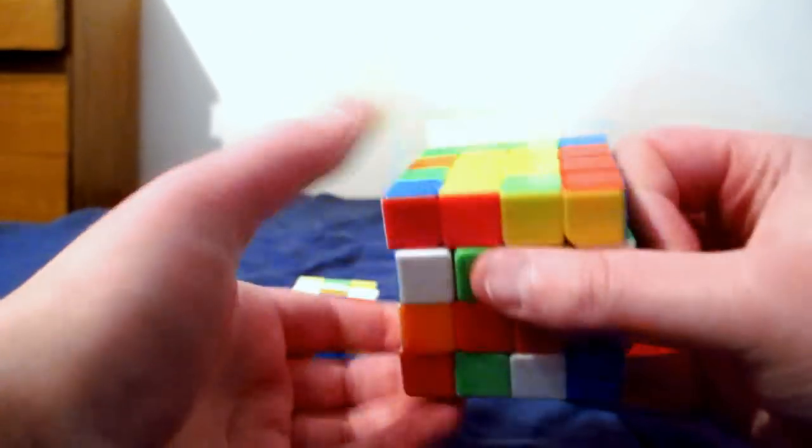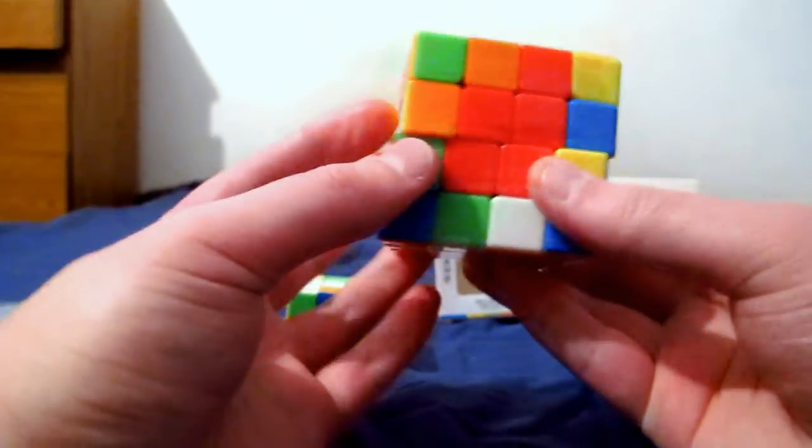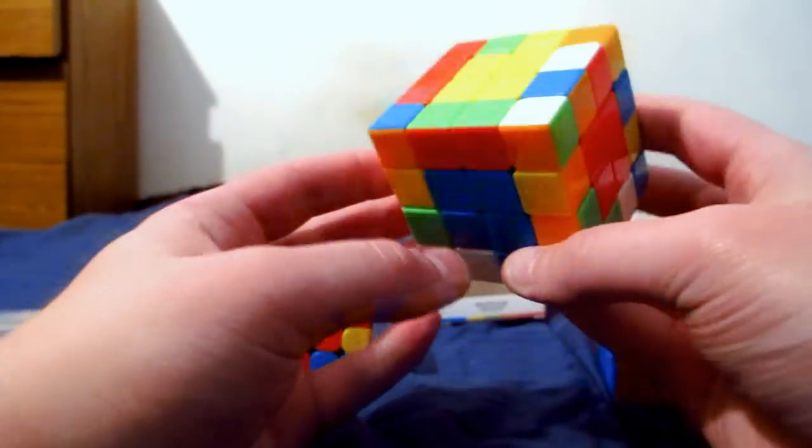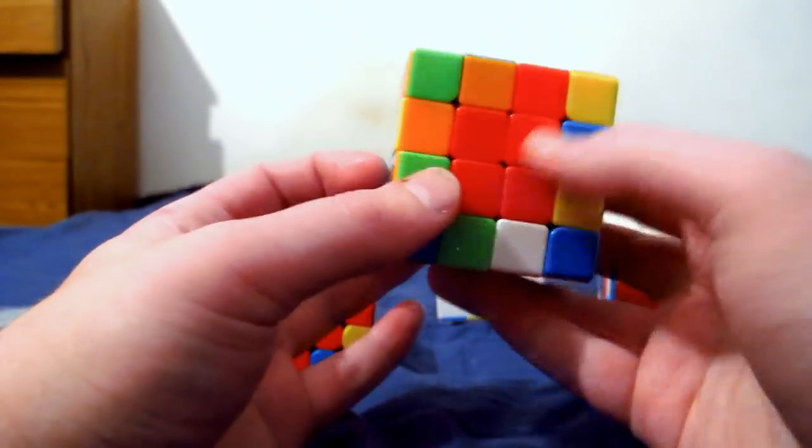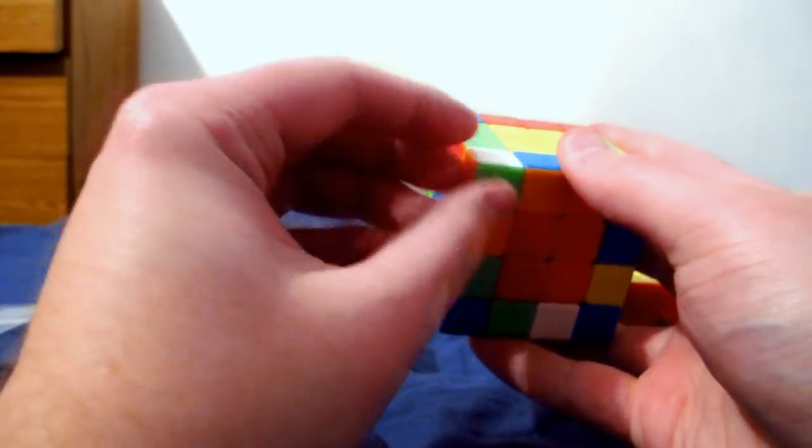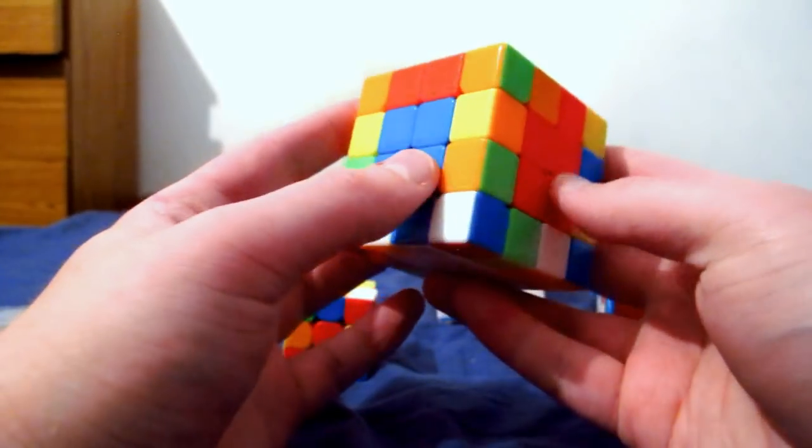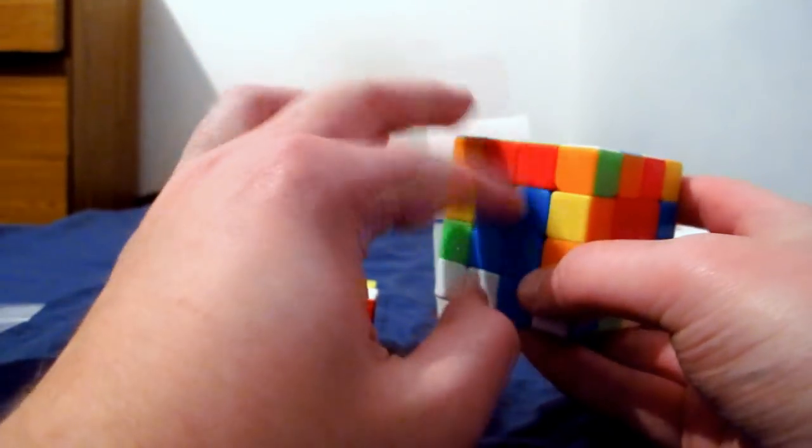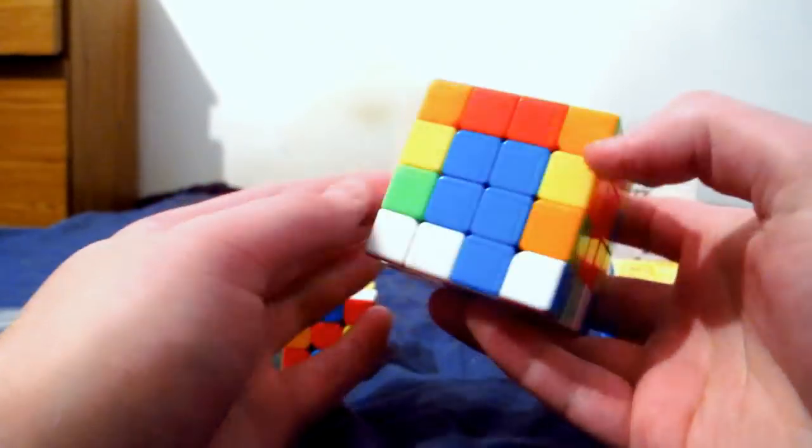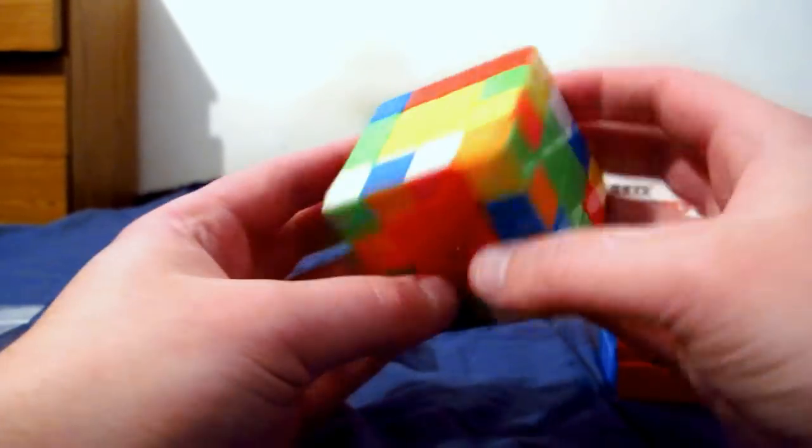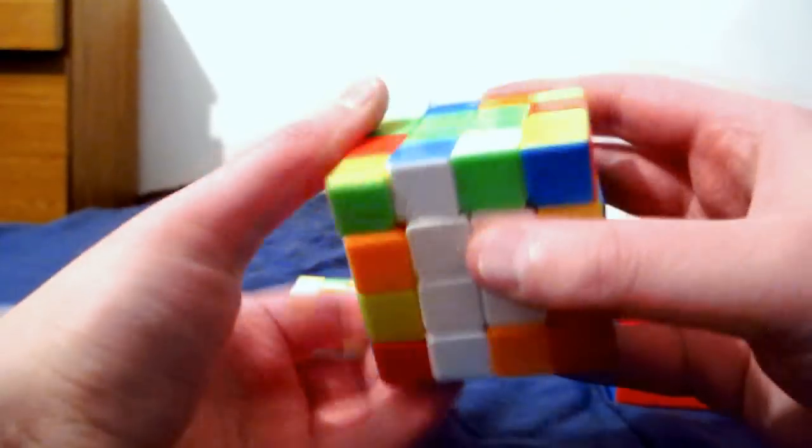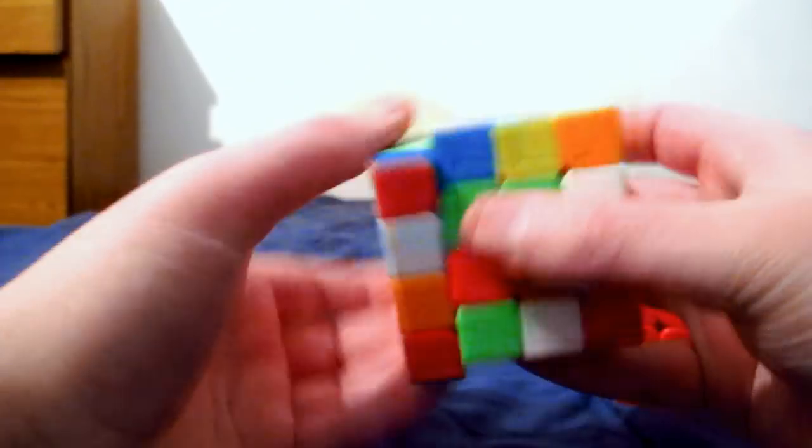This method that I'm using here is known as the reduction method in that what you do is you get the centers, you match up all the centers opposite colors and stuff like that. You can see the cube's color scheme just by matching up the corners and stuff like that if you don't know it offhand. Then what you do is you pair up the edges and then you solve it like a 3x3. It's super efficient.